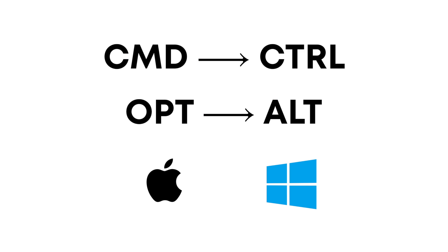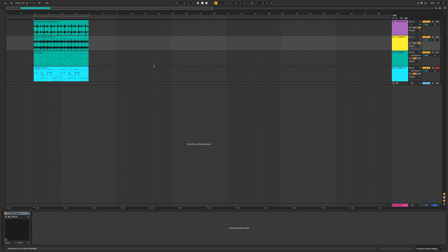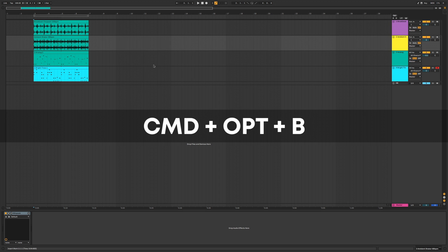In this video I'm going to rapid fire through a bunch of different Ableton Live shortcuts. I'll be speaking in terms of the Mac, but you can substitute Control for Command and Option for Alt if you're on Windows. First let's start off with some view-based shortcuts.